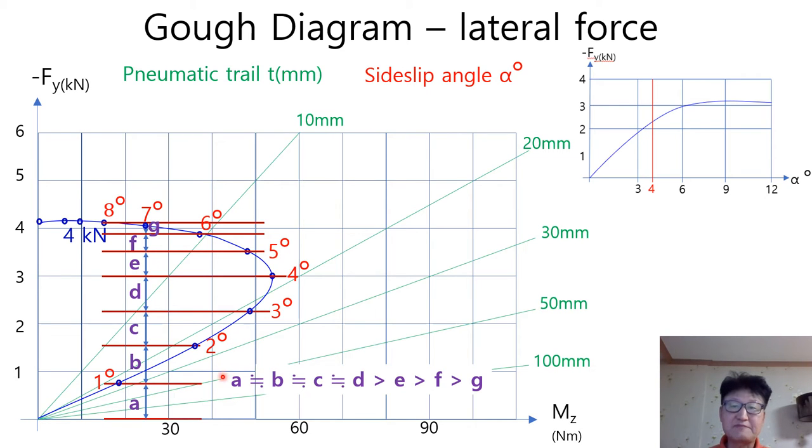You can see here, the increment of lateral force are almost the same until the side-slip angle reaches 4 degrees. A is equal to B, B is equal to C, C is equal to D. It tells us lateral force is linearly changed with respect to the side-slip angle until 4 degrees. You can find this explanation in the 19th video.